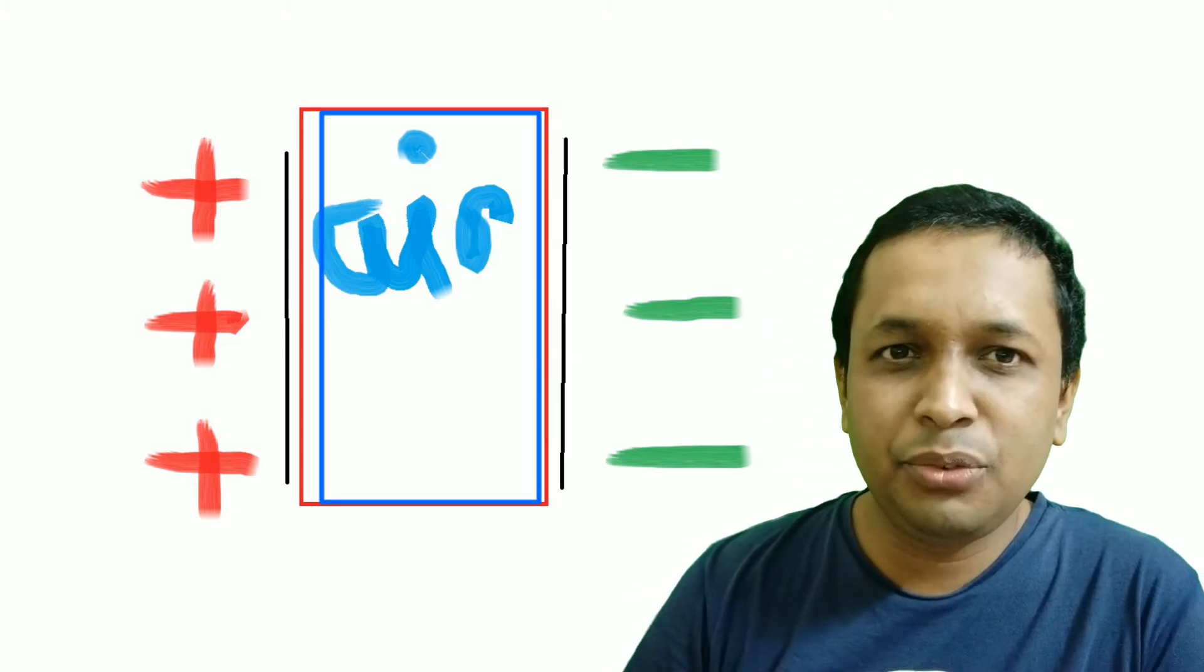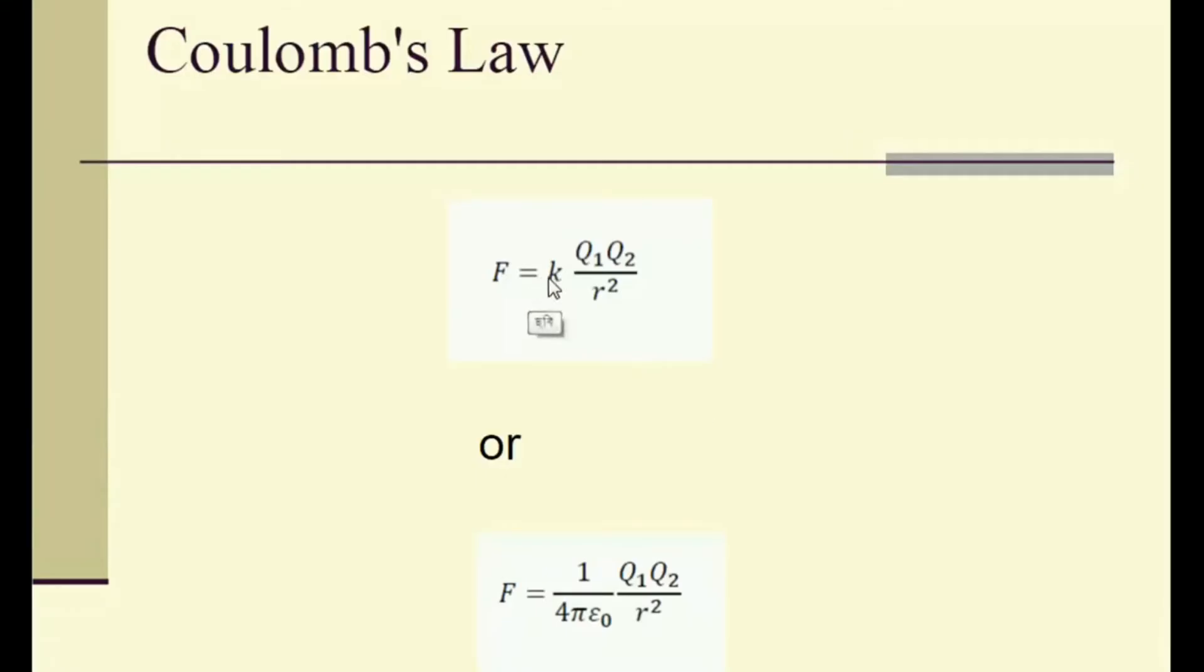It is given the symbol epsilon 0 and has a value. Instead of k, we can write 1 by 4 pi epsilon 0 which represents the permittivity.